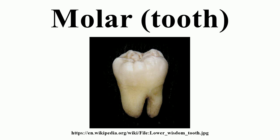Zalambdodont molars have three cusps: one larger on the lingual side and two smaller on the labial side, joined by two crests that form a V or lambda shape. The larger inner cusp might be homologous with the paracone in a tribosphenic molar, but can also be fused with the metacone. The protocone is typically missing. The two smaller labial cusps are located on an expanded shelf called the stylar shelf. Zalambdodont molars are found in, for example, golden moles and solenodons.